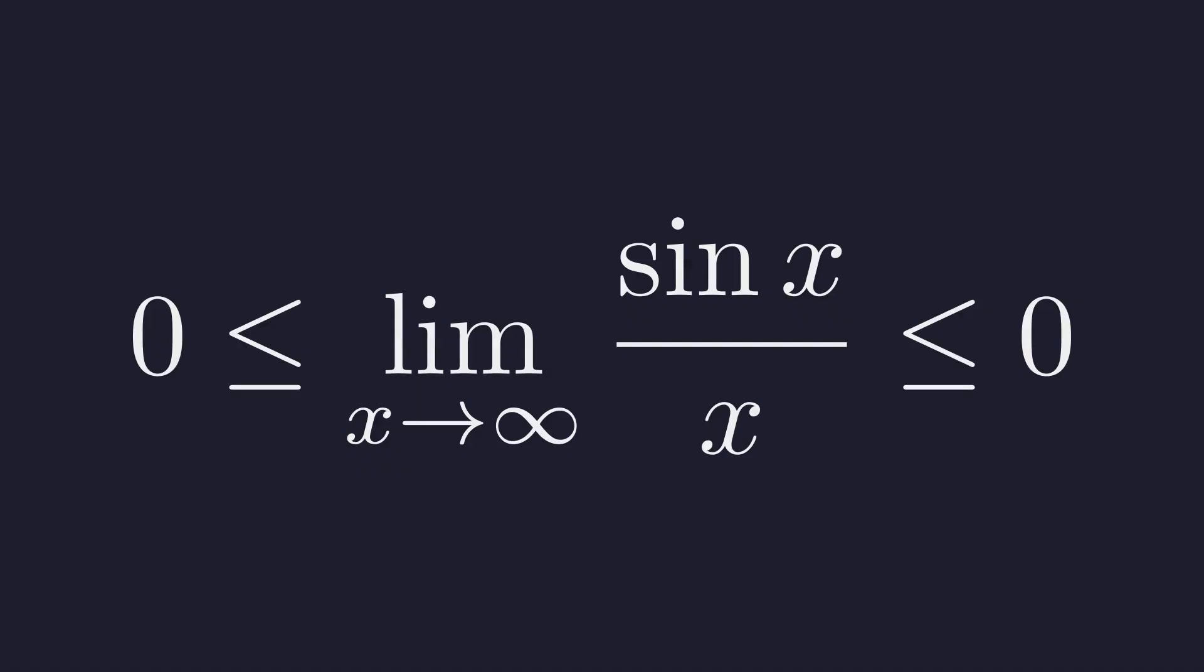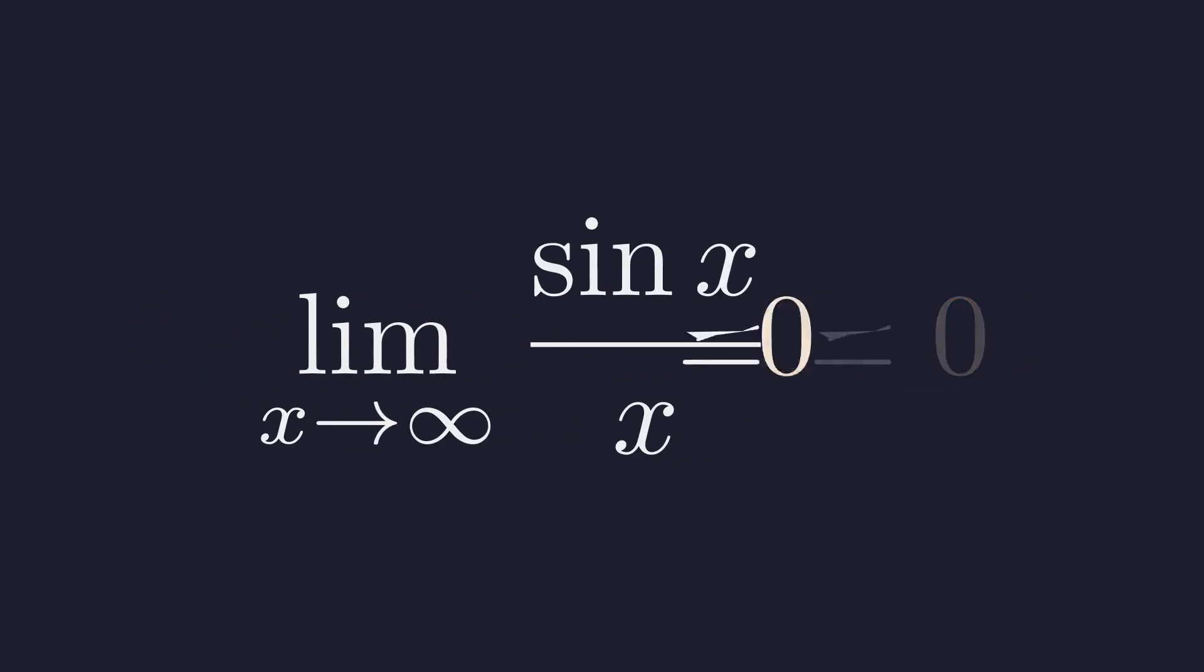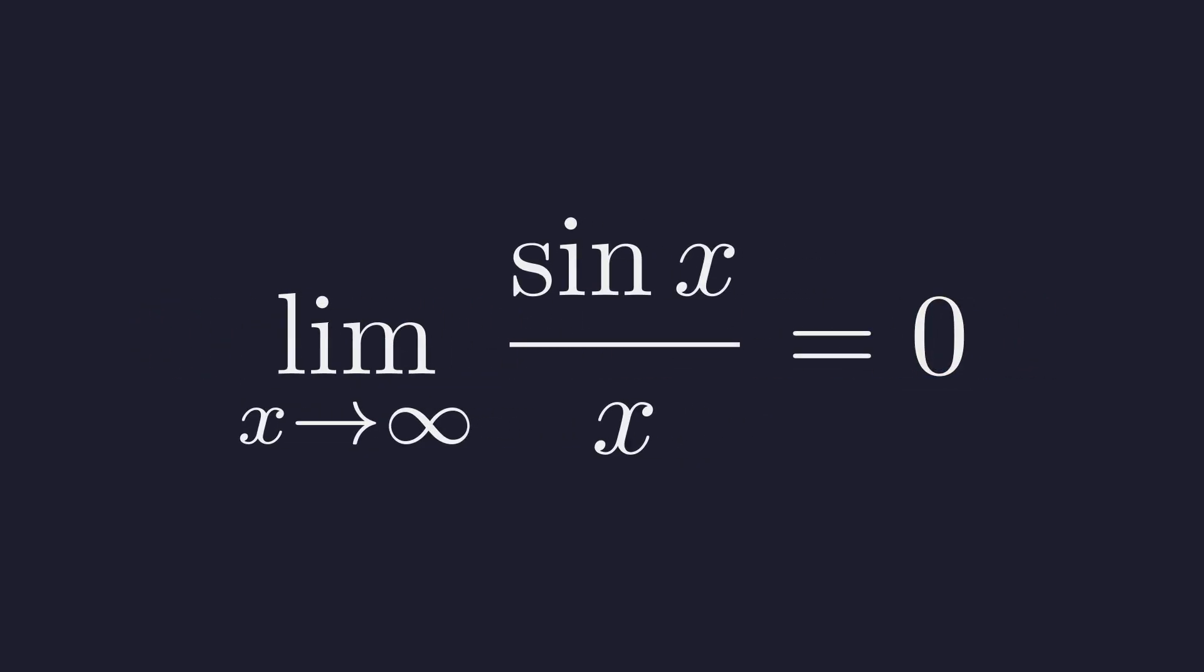Our limit is squeezed between zero and zero. If a value is greater than or equal to zero, and also less than or equal to zero, there's only one number it can possibly be. Therefore, by the squeeze theorem, the limit must be zero. That's the squeeze theorem doing exactly what it promises, forcing a stubborn function to reveal its limit.